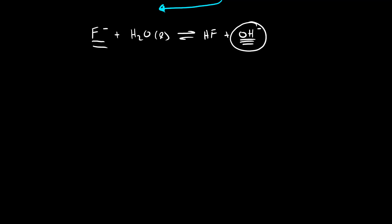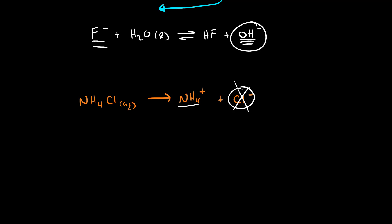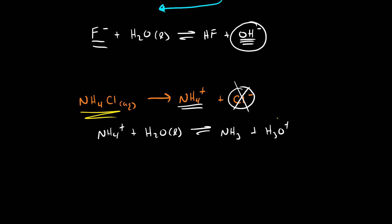Another example: let's say we have ammonium chloride. Ammonium chloride is readily soluble in water, so it dissolves to make an ammonium cation and a chloride anion. As we just said, chloride is the conjugate base of a strong acid, so it will not participate in acid-base chemistry. But ammonium will — ammonium is a weak acid which will react with water to produce ammonia and hydronium. So when ammonium chloride dissolves in water, some hydronium is produced, creating an acidic solution.